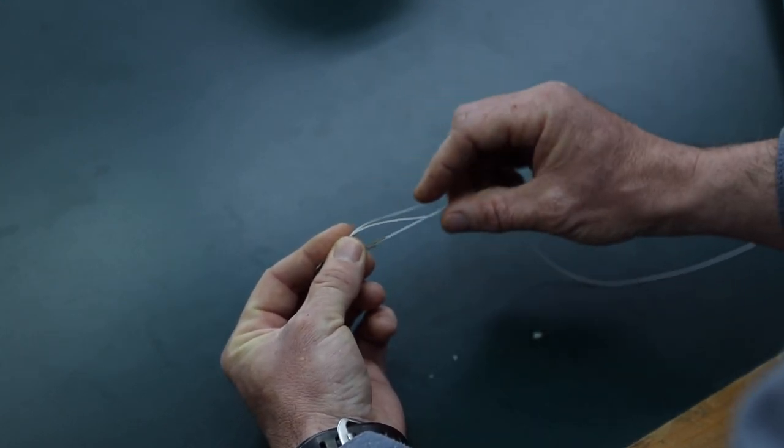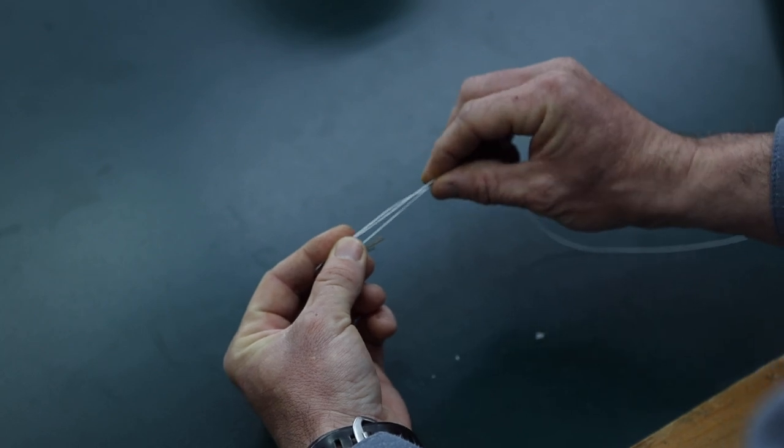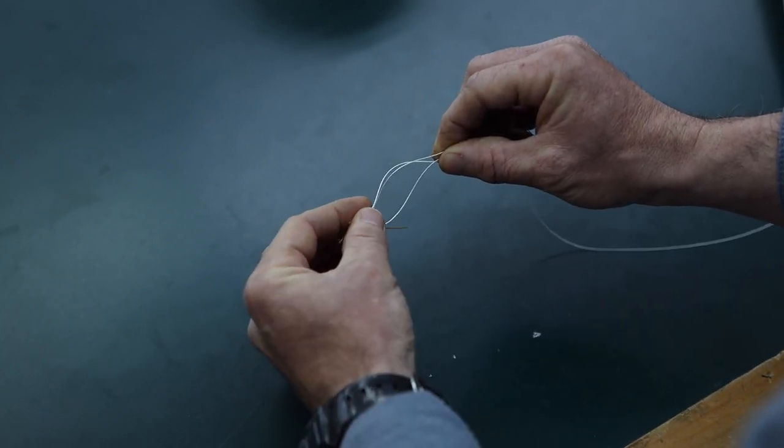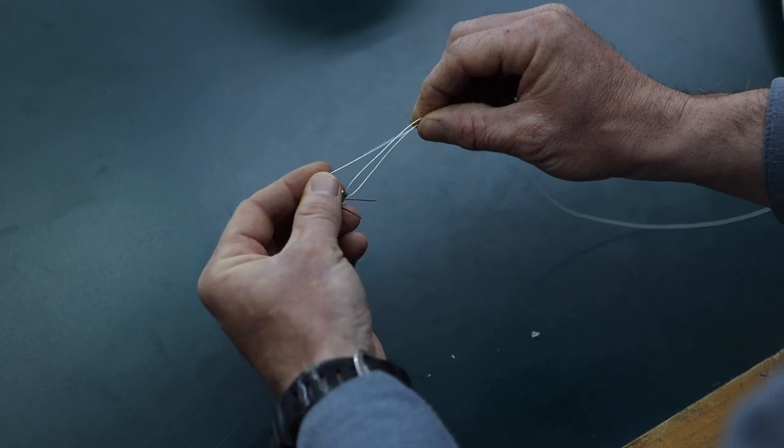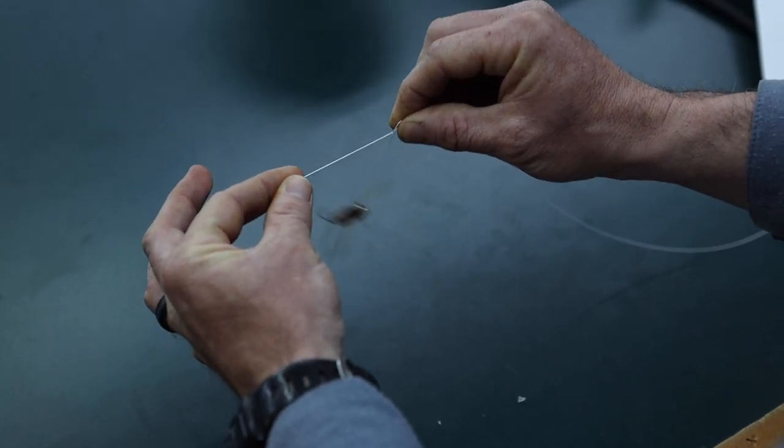Now, I'm going to take the apex of the loop and pinch it against the leader material right there. At this point, all I need to do is hold onto the tag in that loop, so I can go ahead and drop the fly.